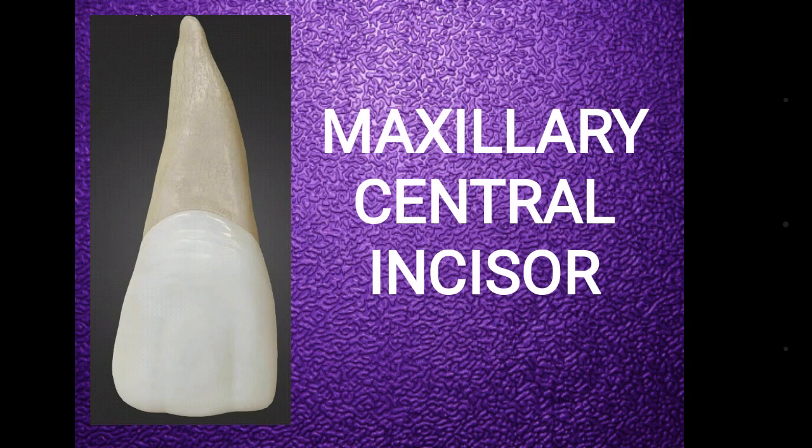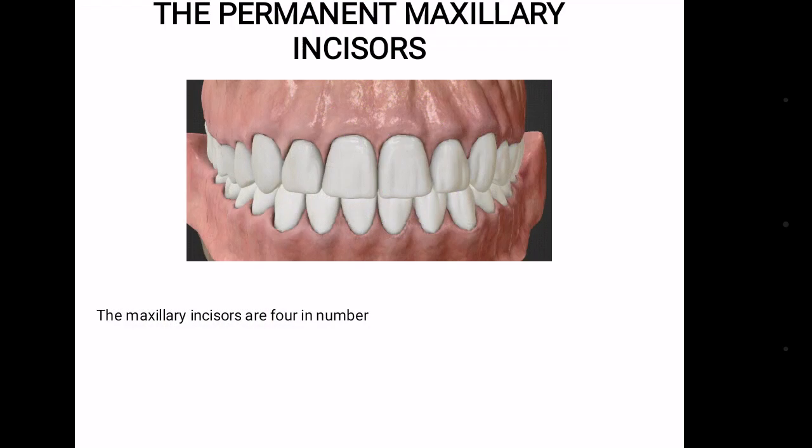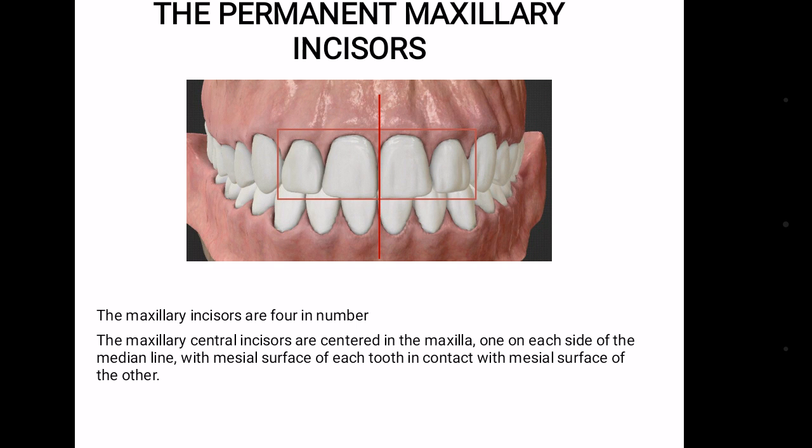Before getting started with maxillary central incisor, let's have a quick introduction to permanent maxillary incisors. Maxillary incisors are four in number, with central incisors in the center of the maxilla, one on each side of the midline, with mesial surface of each tooth in contact with mesial surface of the other.